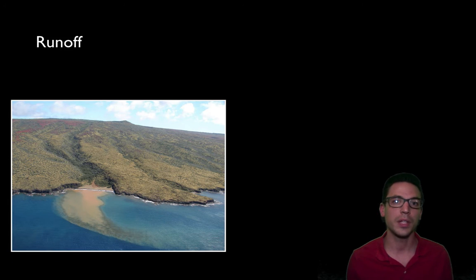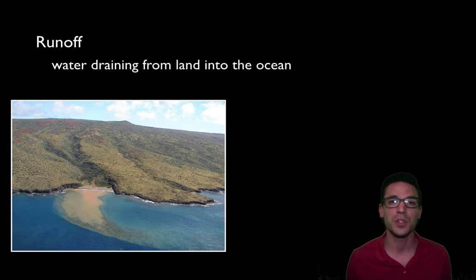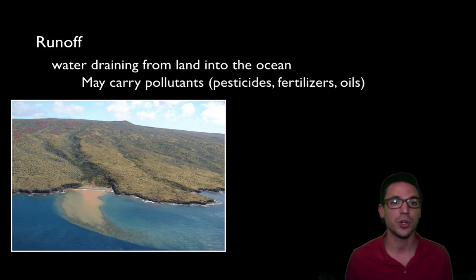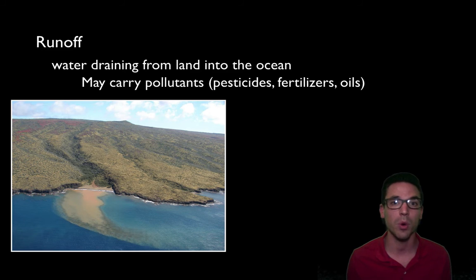Runoff is another way to change the chemical composition of seawater — it's when water drains from land into the ocean. As water falls on land and runs off through groundwater or along the surface, it can bring nutrients and minerals that organisms need to survive, potentially increasing productivity of phytoplankton and adding biomass to the food web. However, runoff can also bring pollutants: water running through a nearby farm might carry pesticides and fertilizers, while water from urban areas might carry oils from cars and industry, negatively impacting the local marine environment.